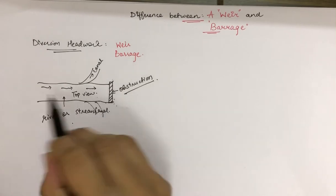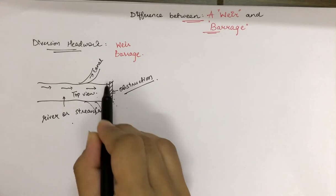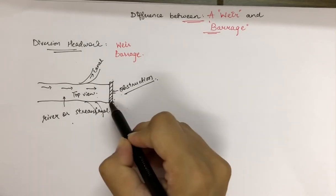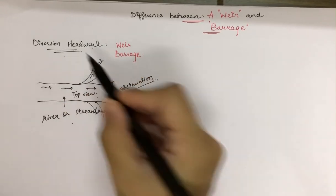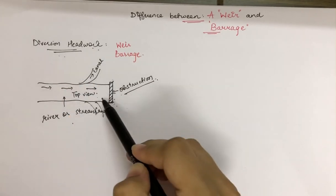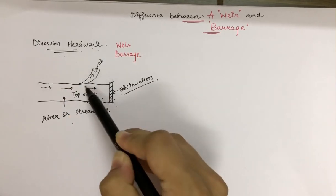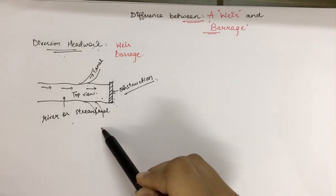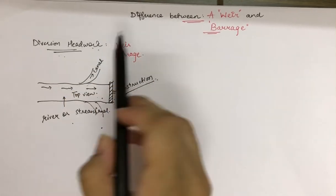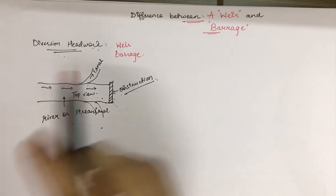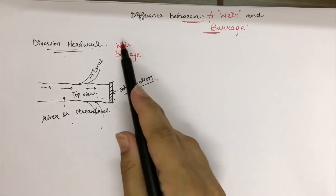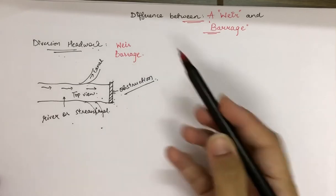We have kept this obstruction across the river. We will call this obstruction a diversion headwork. We call it diversion headwork because it raises the water level and diverts it. This obstruction could also be called a wear or a barrage.